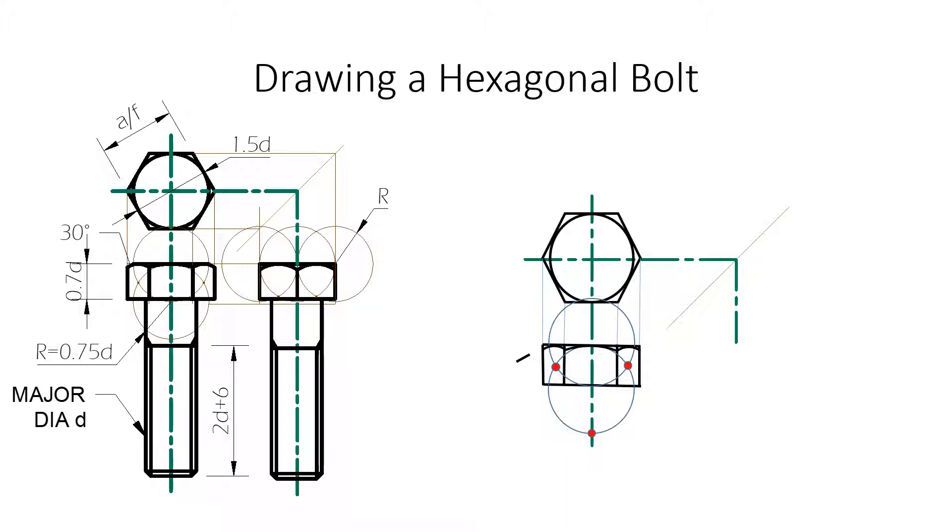To complete the definition of the top of the bolt head, we need a 30 degree line that we're going to put in the corner there. It's a bevel. And we're going to trim it to suit.